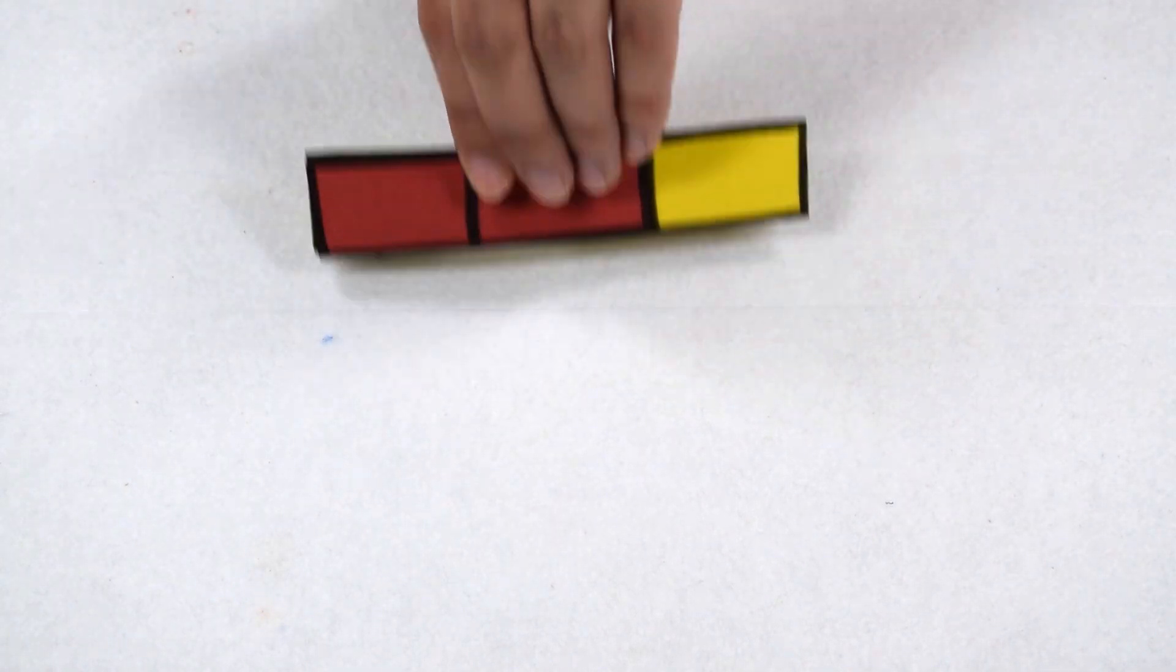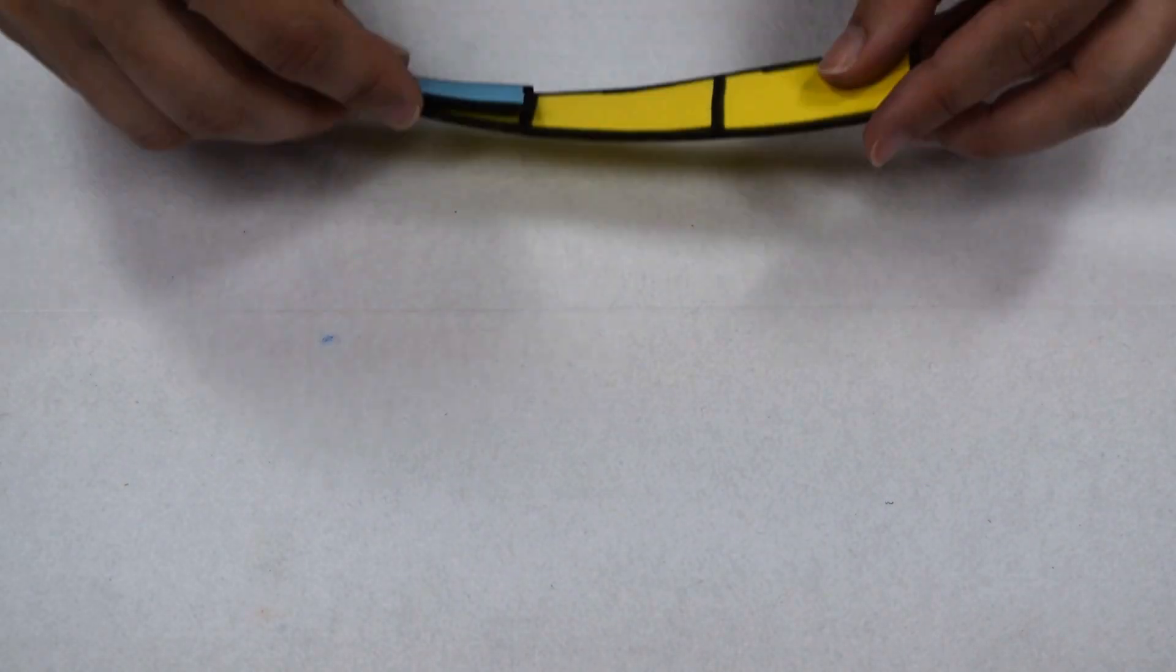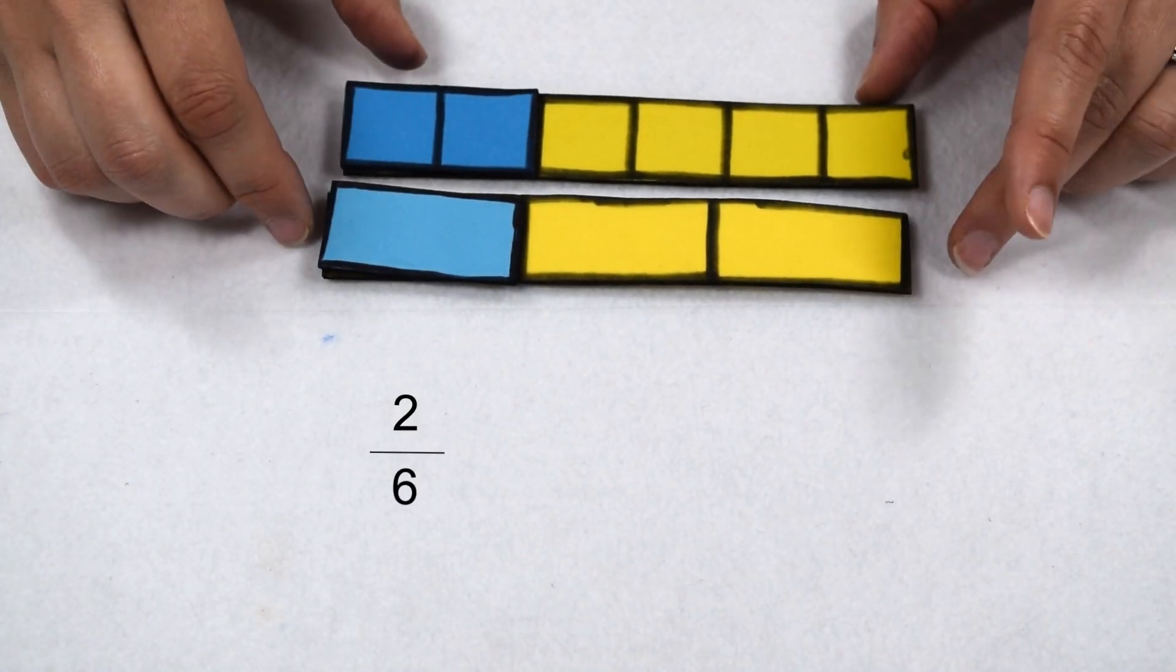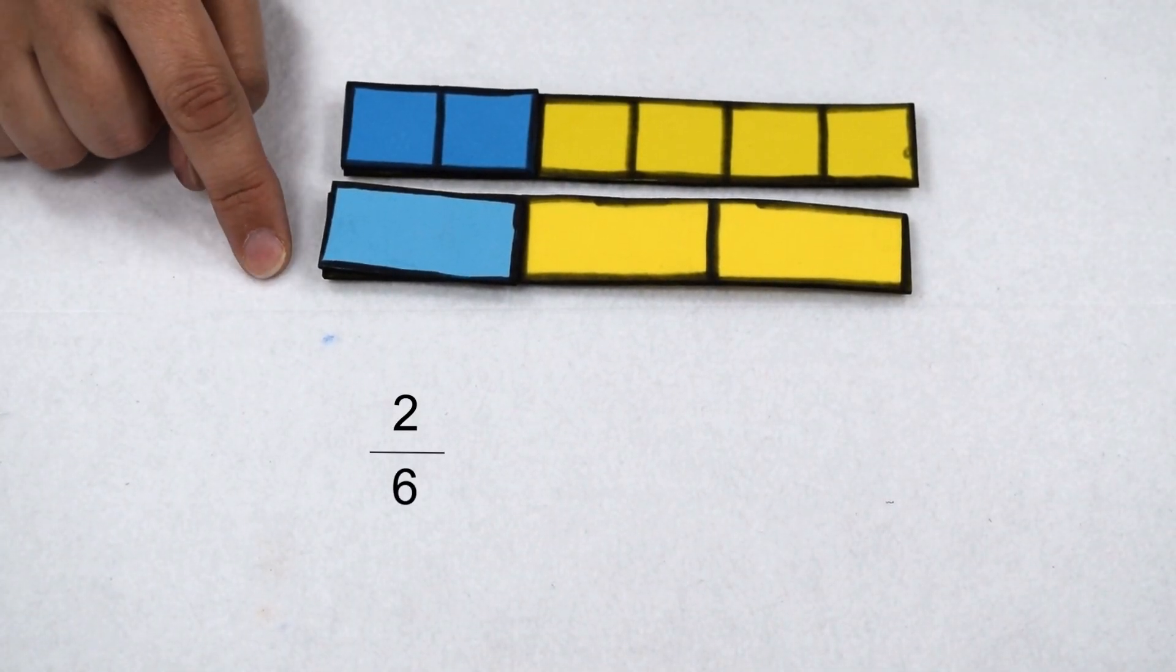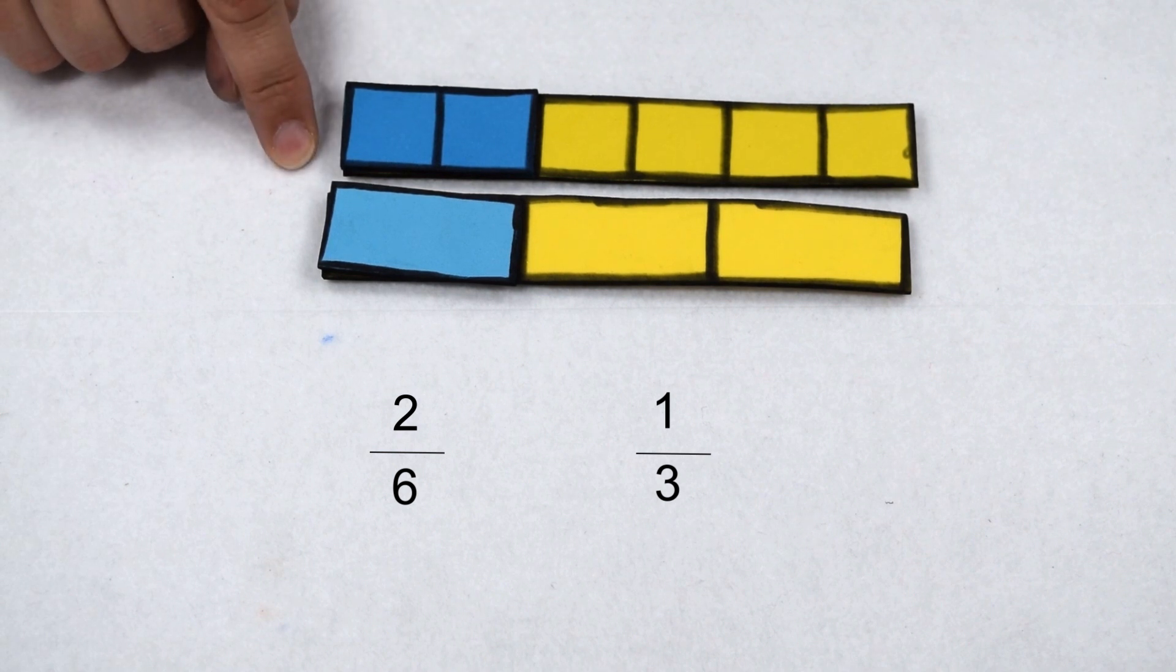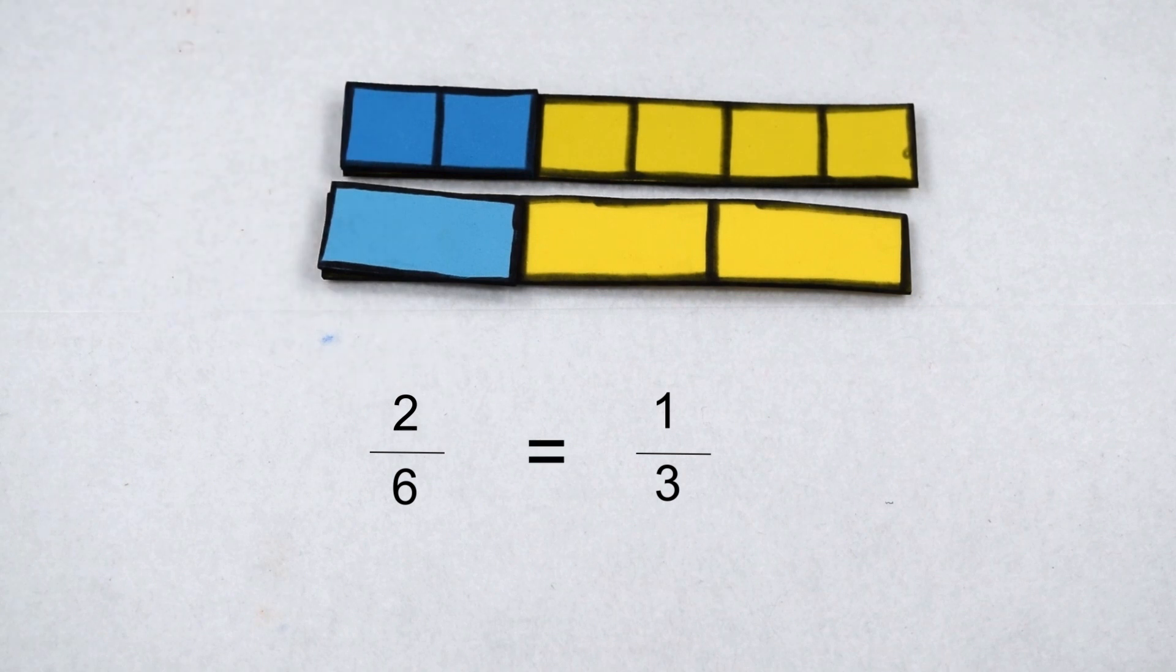What happens if we have two fractions where one size isn't smaller or larger than the other? Here we have 2 sixths compared to 1 third. We can see that just as much is shaded in the sixth bar as there is shaded in the thirds bar. So one fraction isn't larger or smaller than the other. This actually tells us that 2 sixths and 1 third are equivalent fractions. So 2 sixths would equal 1 third.